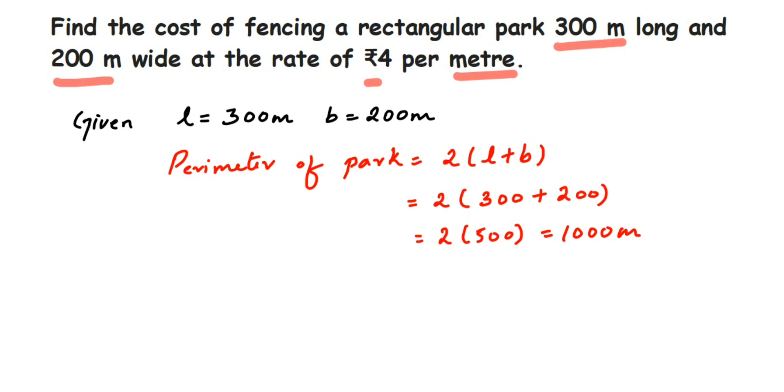Now they said rupees 4 per meter, means for 1 meter they are charging 4 rupees. So for 1000 meters, how much will it be? We have to multiply 4 and 1000. For 1 meter it is 4 rupees, for 1000 meters it is 4 into 1000, so it will be 4000.